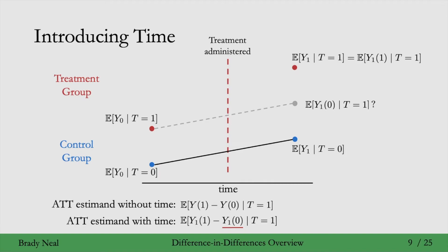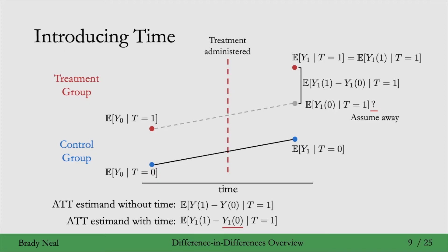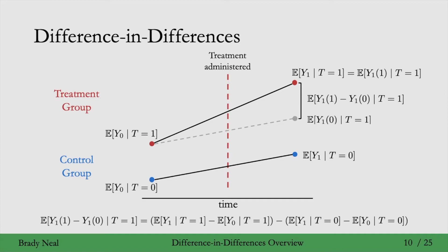Once we have that counterfactual estimate, we take the difference between that and the top red point to get the average treatment effect on the treated. To get this counterfactual point shown in gray, we need to make some assumptions — we'll go into those in a bit — but first I need to tell you a bit more about what difference in differences is to complete this overview.